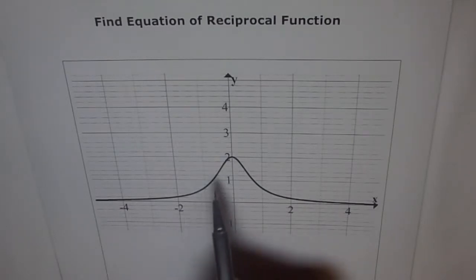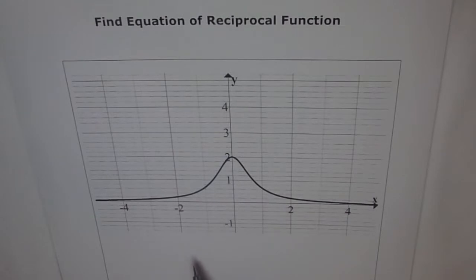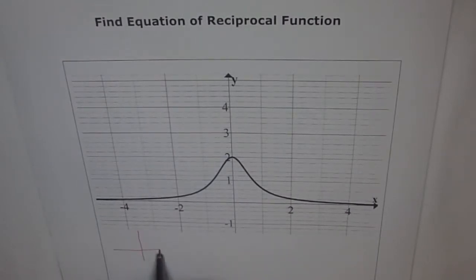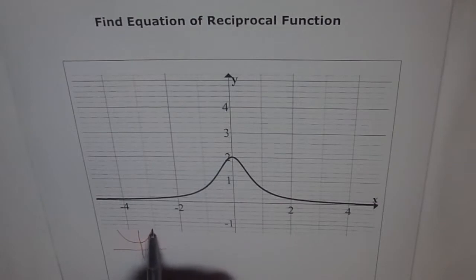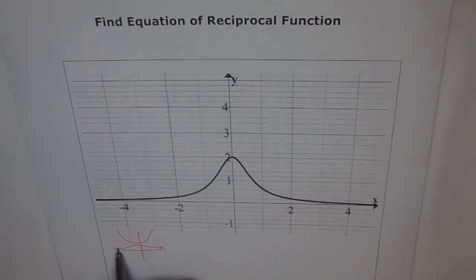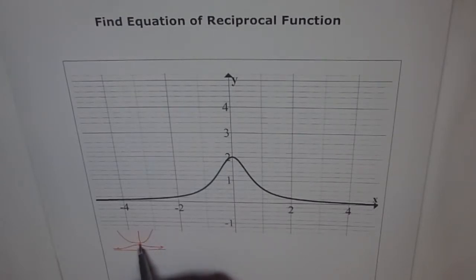When can you get a graph like this? The possibility of getting a graph is like this. If you have a parabola like this, then its reciprocal could be like this. So that means our function is like x squared plus something, right?